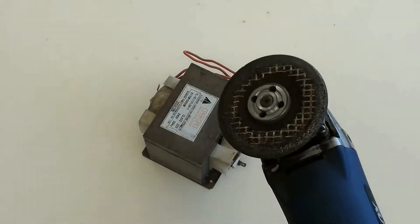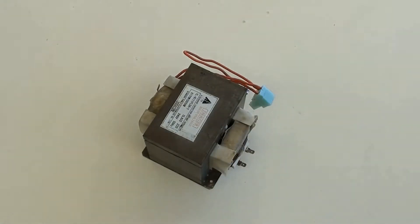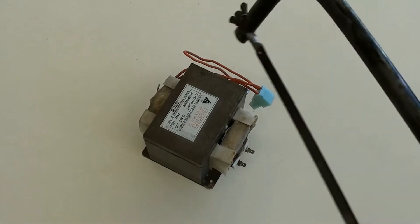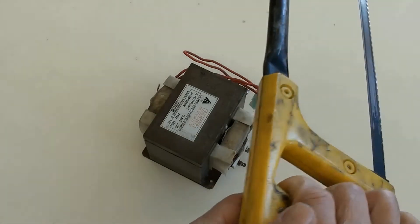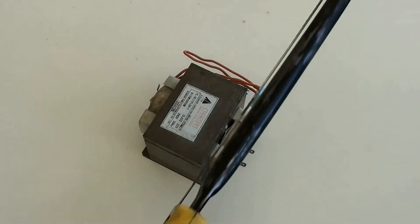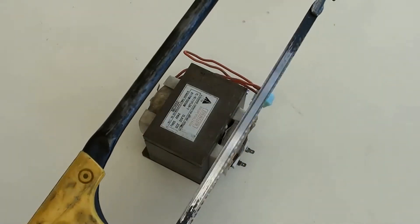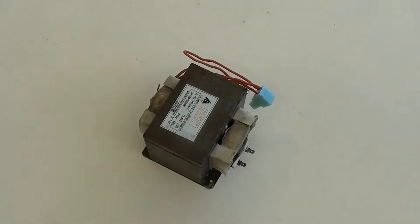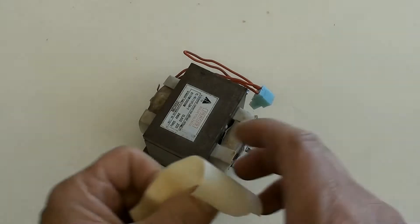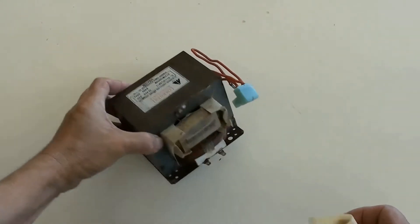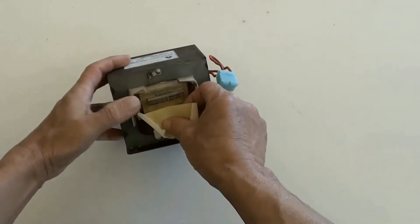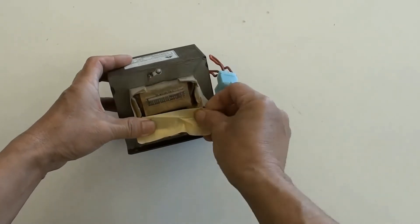An angle grinder can be used to cut the secondary coil off, and so does a hand saw. Before cutting the secondary coil, use tape to cover the primary coil to prevent it from being damaged.